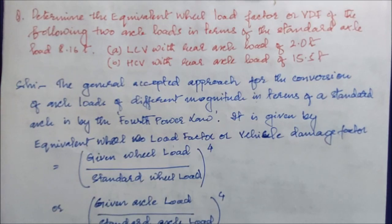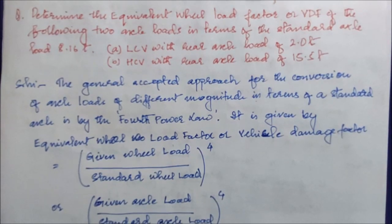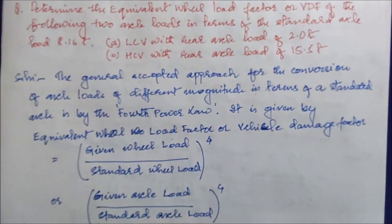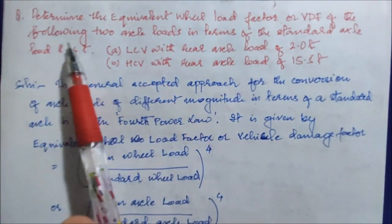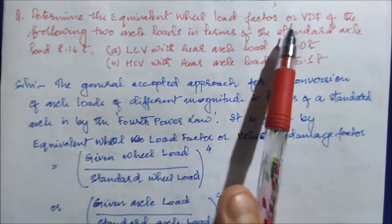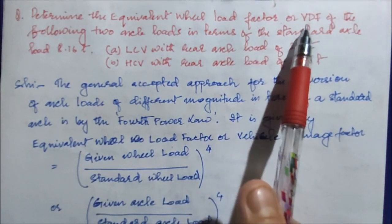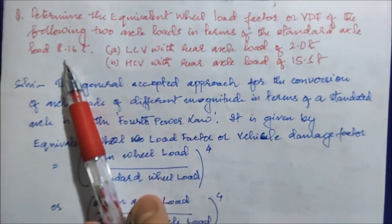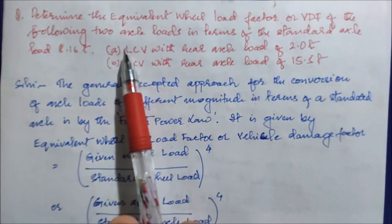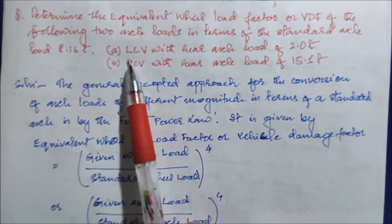The effect of load repetitions likely during the design life of the flexible pavement, and the dynamic effects due to moving wheel loads, are to be taken into account. The effect of loading is determined in terms of how much damage it is going to contribute to the pavement. Now, in the question: determine the equivalent wheel load factor or vehicle damage factor of the following two axle loads in terms of the standard axle load, which is 8.16 tons.